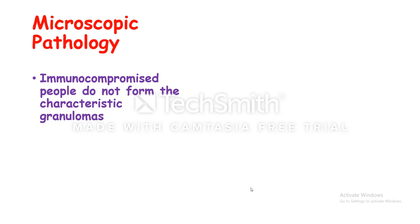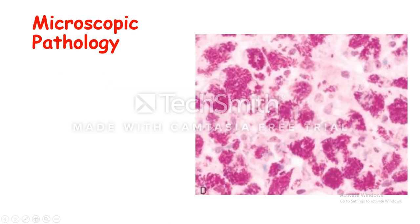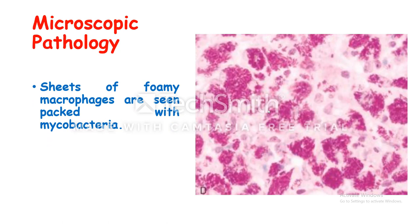In immunocompromised people, we do not see this characteristic granuloma because they cannot form granulomas due to deficiency of T helper cells. We can only see macrophages packed with mycobacteria — sheets of foamy macrophages packed with mycobacteria. The mycobacteria proliferate inside the macrophage unchecked because of loss of T cell immunity. The macrophages look foamy because the organisms contain a lipid fraction, which gives them this foamy pattern. When stained with acid-fast stain, we can see the organisms taking a red appearance — red rods.